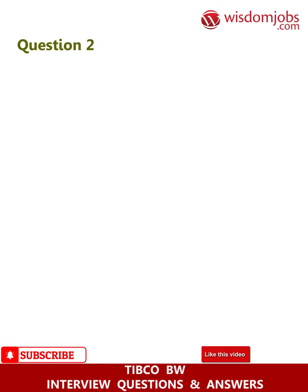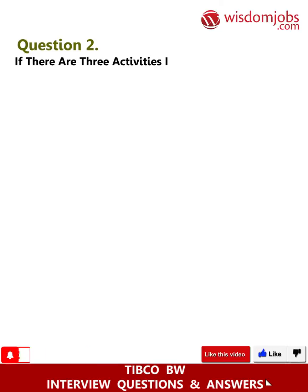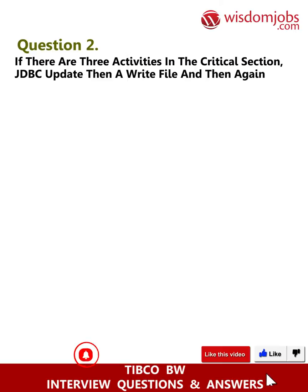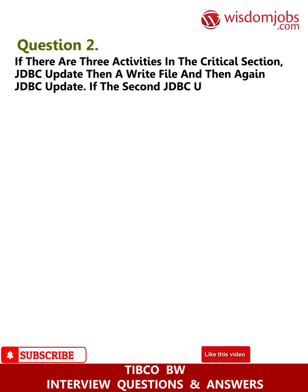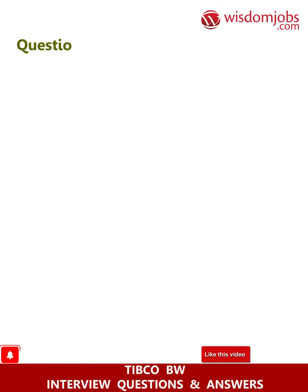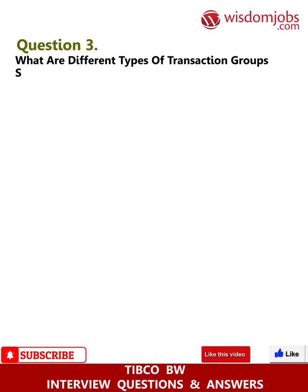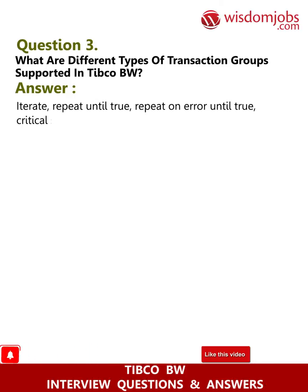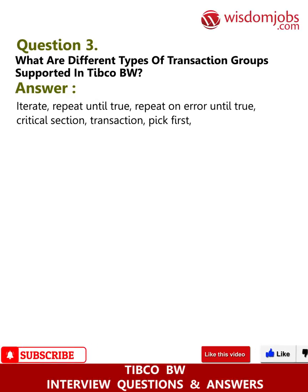Question 2: If there are 3 activities in the critical section — JDBC Update, then Write File, then again JDBC Update — and the second JDBC Update fails, what will happen to the file written by the Write File activity? Answer: The contents of the file will persist. Question 3: What are the different types of transaction groups supported in TIBCO BW? Answer: Repeat Until True, Repeat On Error Until True, Critical Section, Transaction, Pick First, and While True.